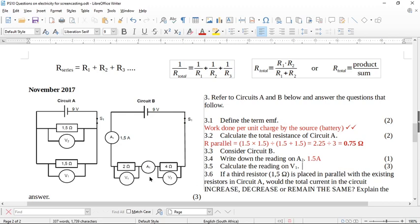Now it says to you, calculate the reading on voltmeter 1. Where's voltmeter 1? Voltmeter 1 is over here, and the circuit is delivering 9 volts. So if the circuit is delivering 9 volts, it's going to be split up between these two resistors, because resistors in a series circuit are potential dividers.